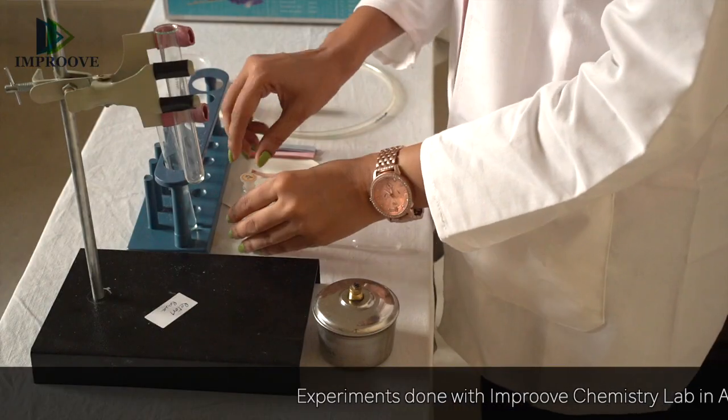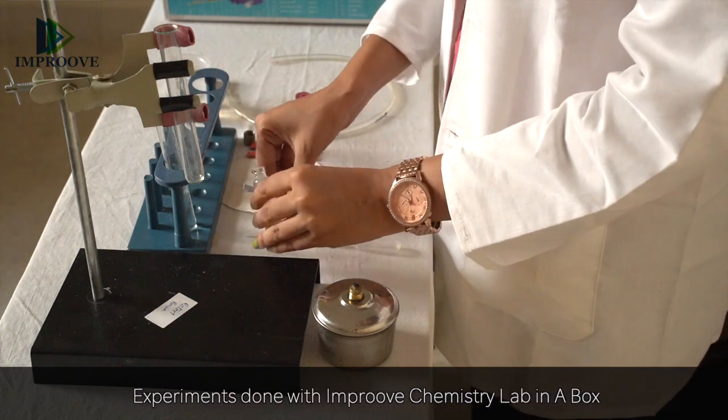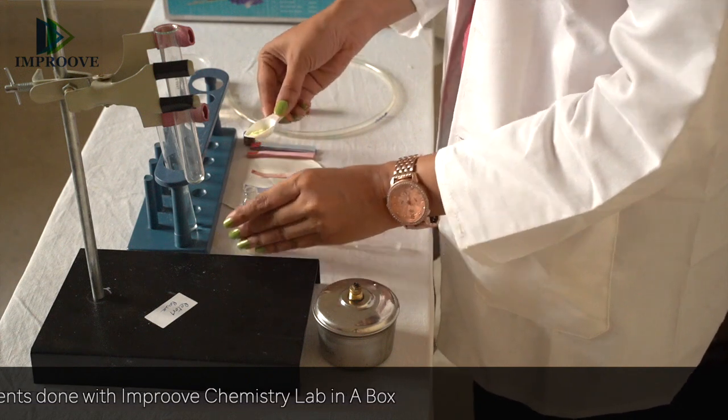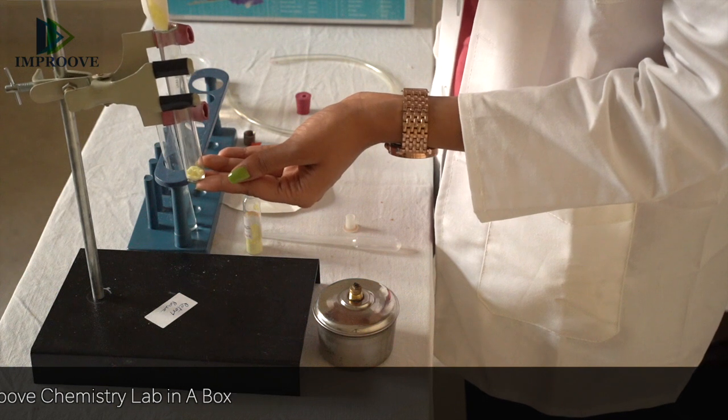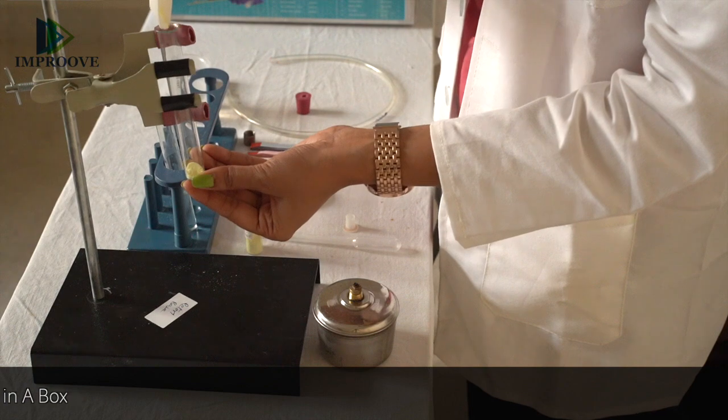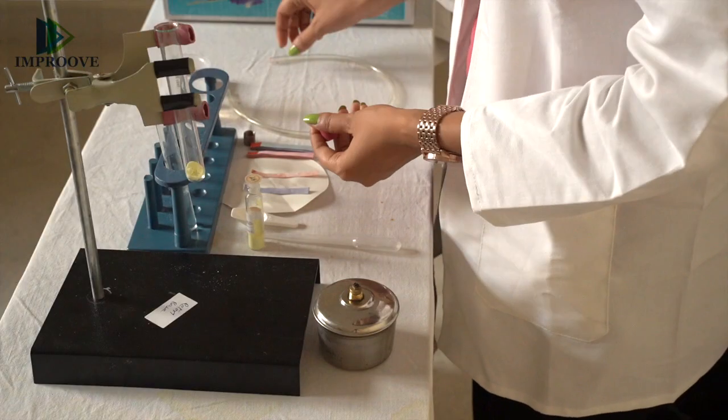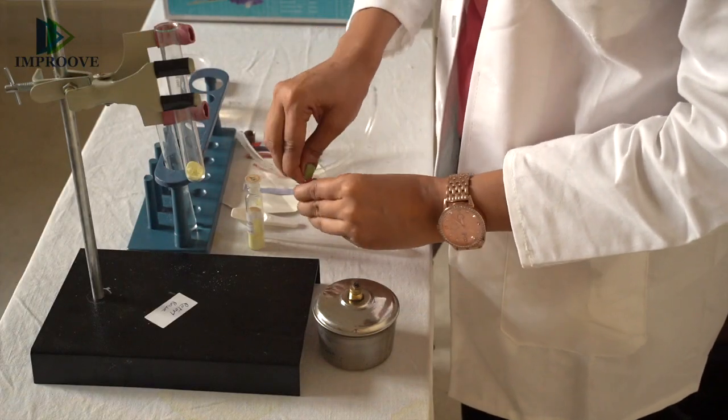To the test tube, add about 5 grams of sulphur powder. Then take the cork with a hole and the delivery tube and carefully place it inside.